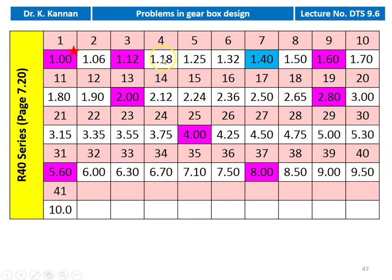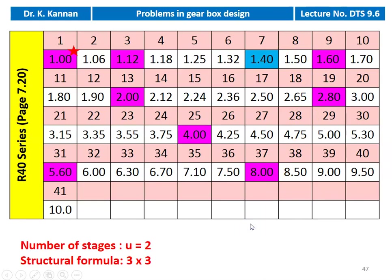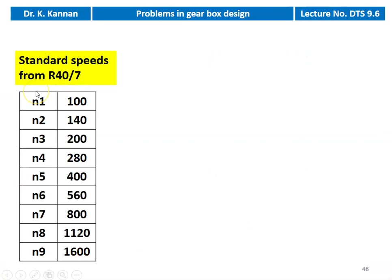Counting every 7th value in the R40 series starting from 100, we obtain the 9 speeds. The number of stages C equals 2, and the structural formula is 3×3. These are all 9 speeds from R40 by 7: 100, 140, 200, 280, 400, 560, 800, 1120, and 1600.